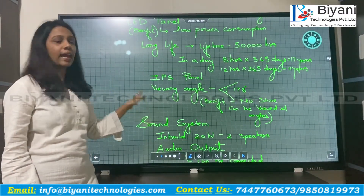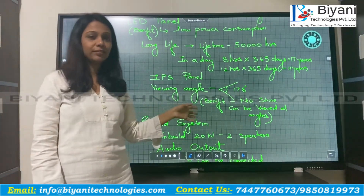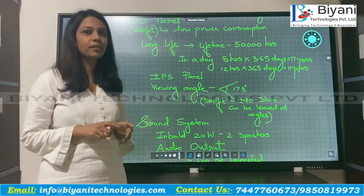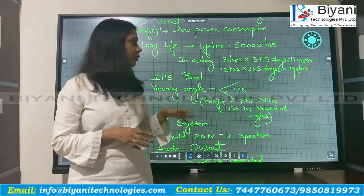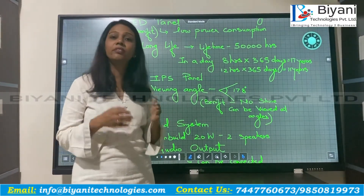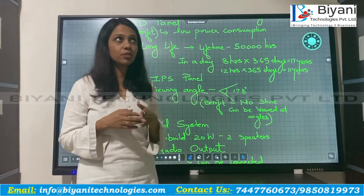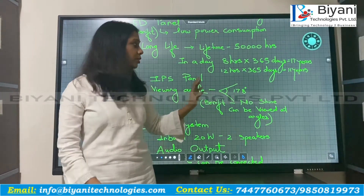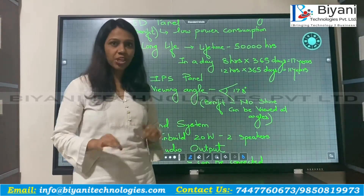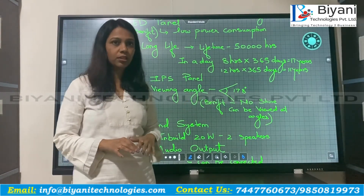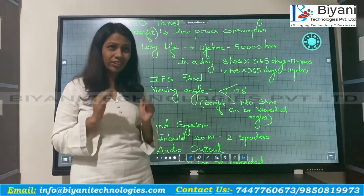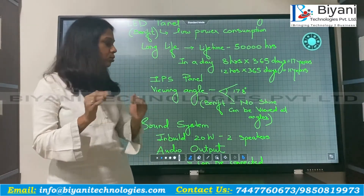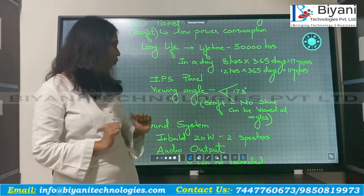This panel is an IPS panel, which means the viewing angle is 178 degrees. The benefit of this is that even if a student is sitting at the side, the board is not going to shine at all — he will see the panel with as much clarity as the student sitting in the front row.